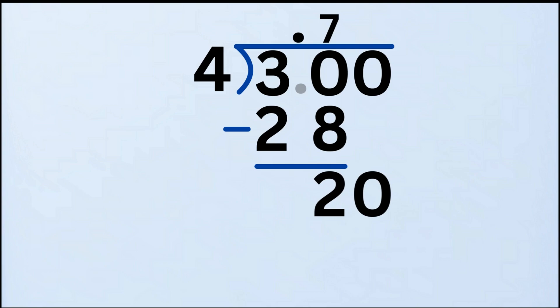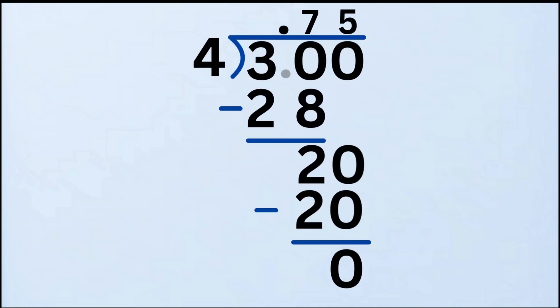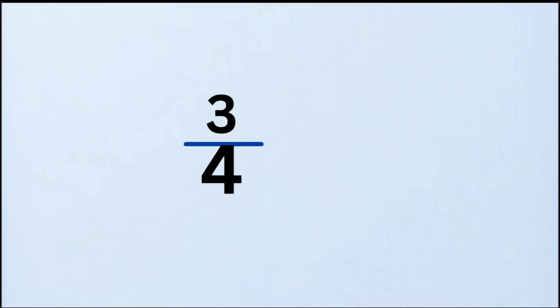Now we bring the zero down to the 2, and we have 20. How many times does 4 go into 20? That's easy — 5 times, because 4 times 5 equals 20. Now subtract: 20 minus 20 equals 0. No remainder — that means we're finished! So the final answer to 3 fourths as a decimal is 0.75.